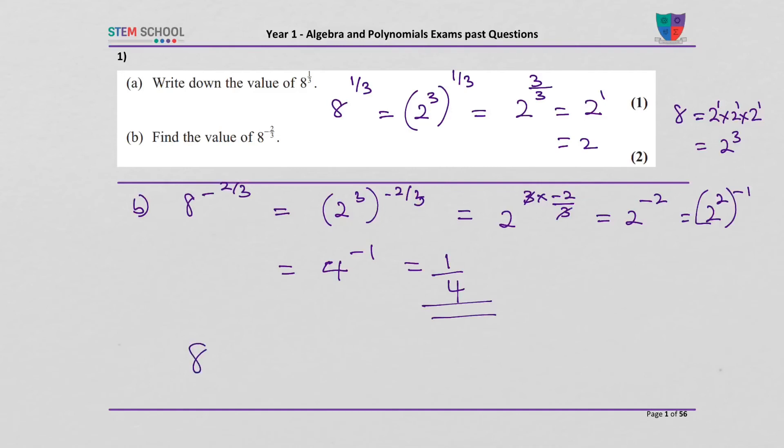So 8 to the power of minus 2 thirds equals 1 over 4, and 8 to the power of 1 third equals 2.